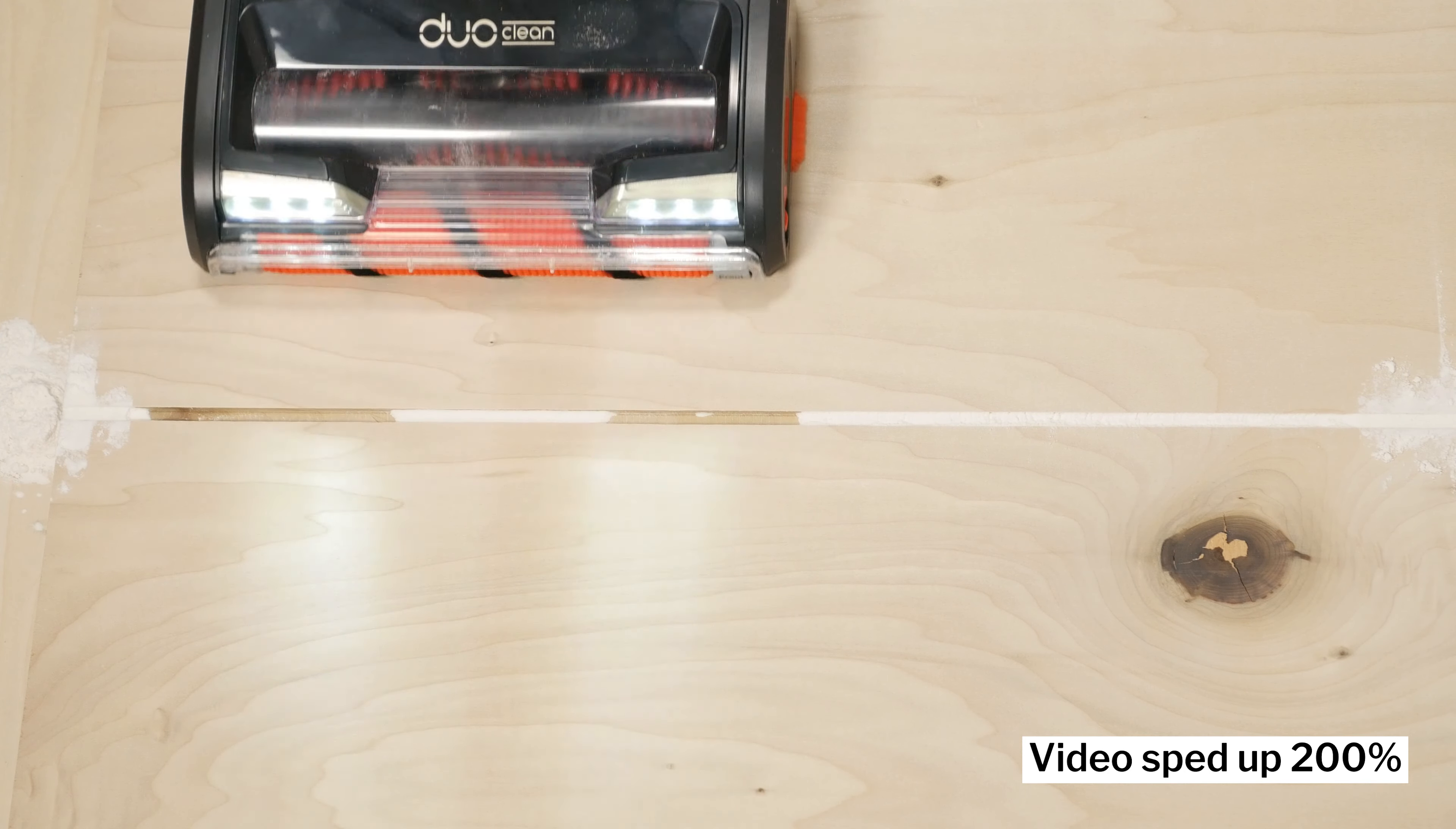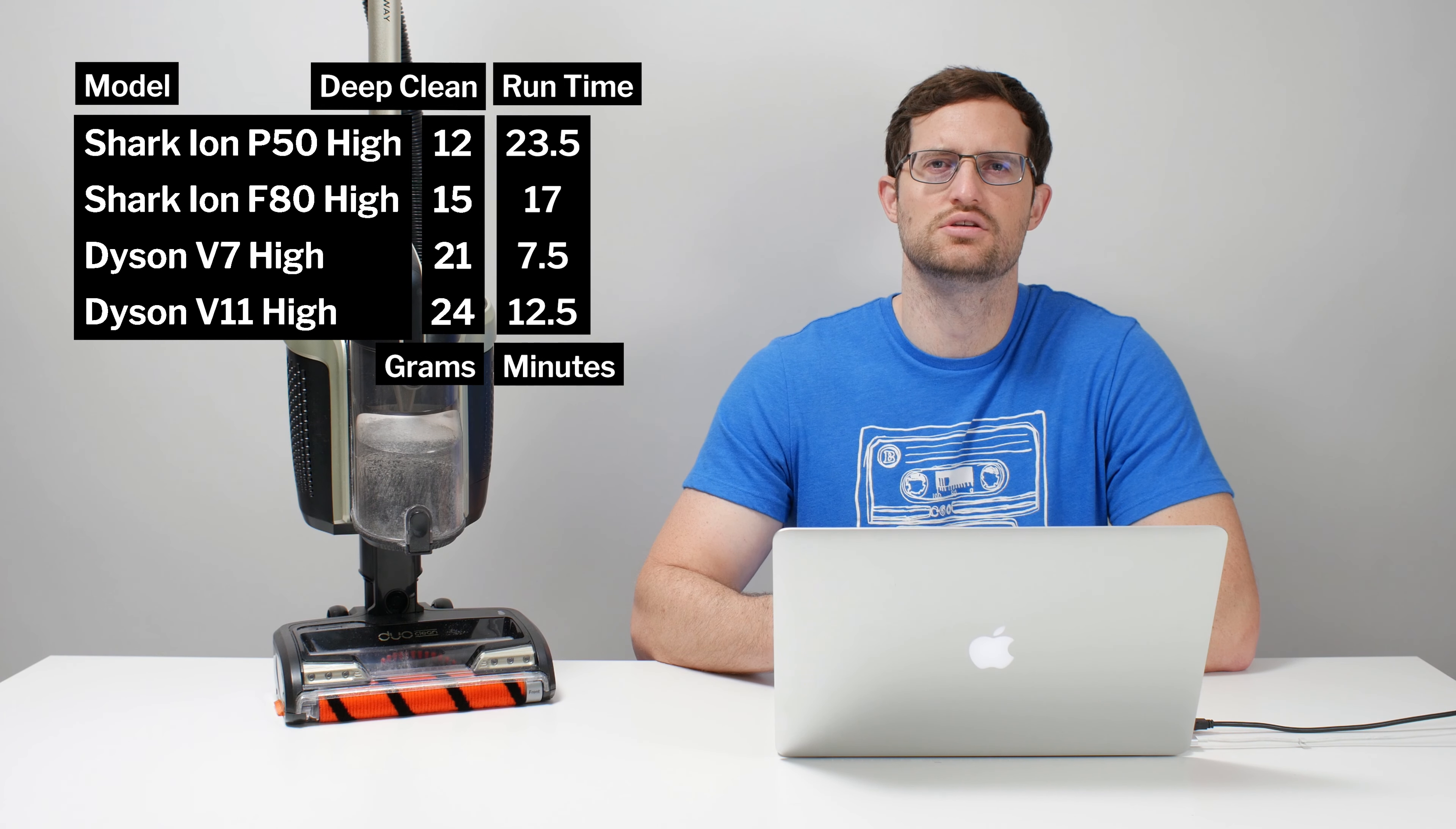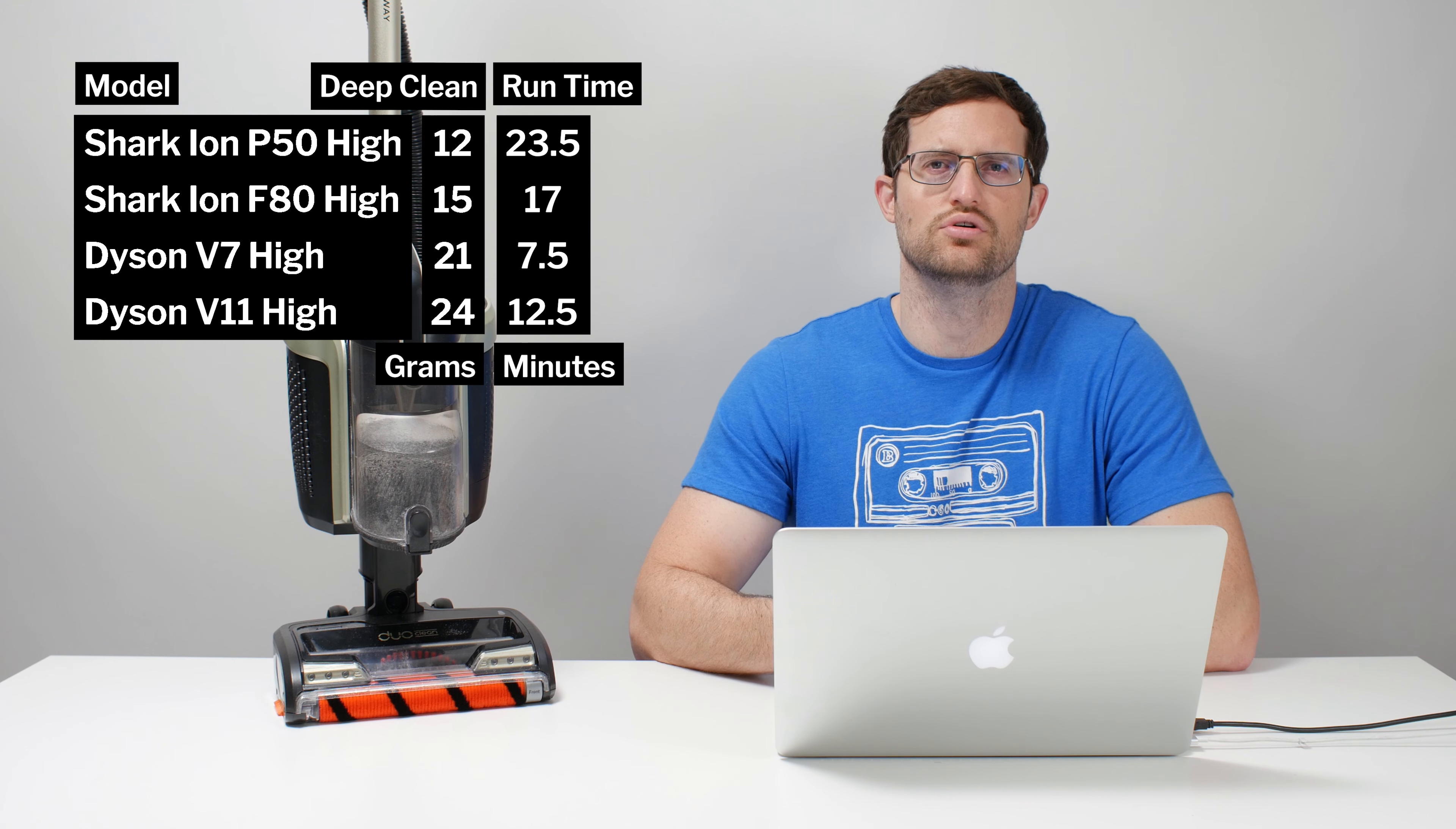Moving on to battery life and performance, the Ion P50 was tested to have longer runtime on high than all but one other cordless vacuum that we tested. The P50 was tested to run for 23 and a half minutes on high or boost mode. So far, so good, but there are two problems.